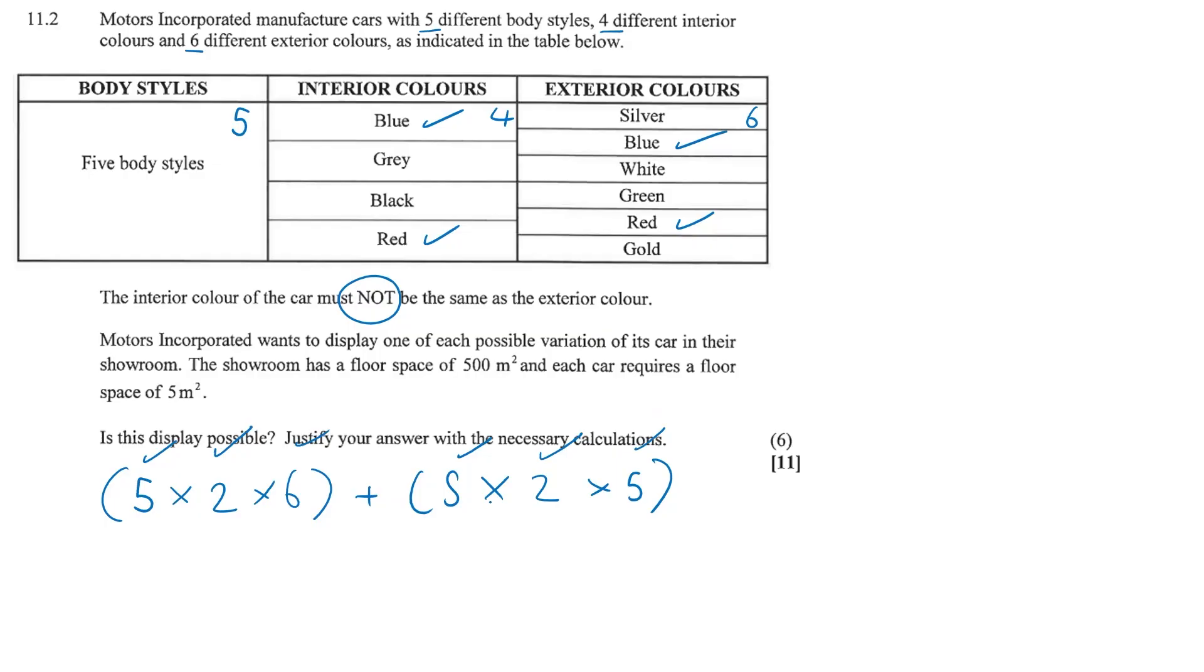5 times 2 times 6 plus 5 times 2 times 5 is going to give us a value of 110. They want to display one of each possible variation of its car in their showroom.